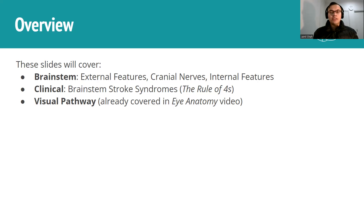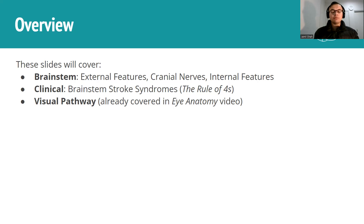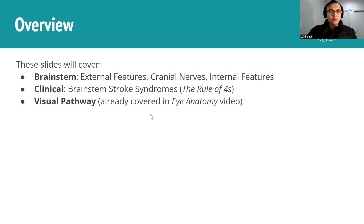It can get quite confusing, so the rule of four is a very handy little trick to have up your sleeve to quickly understand how stroking a particular part of the brainstem affects the relevant cranial nerve nuclei, and therefore figuring out how the patient would present and vice versa. We've also covered the visual pathway in the eye anatomy video, so feel free to look at that and ask any questions in the comments.